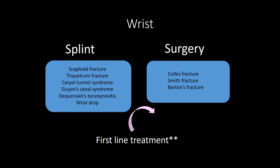Scaphoid fracture presents with tenderness in the anatomical snuff box, and x-ray is often unremarkable. Because the blood supply runs distal to proximal, the scaphoid is at high risk of avascular necrosis. Any patient with negative x-ray but high suspicion for scaphoid fracture needs a thumb spica splint and outpatient follow-up. The triquetrum is the second most commonly fractured carpal bone. Scapholunate dissociation is the most common ligamentous injury of the hand — greater than 3mm separation is suggestive, and greater than 5mm confirms it. Treatment is thumb spica splint and orthopedic referral for operative repair.